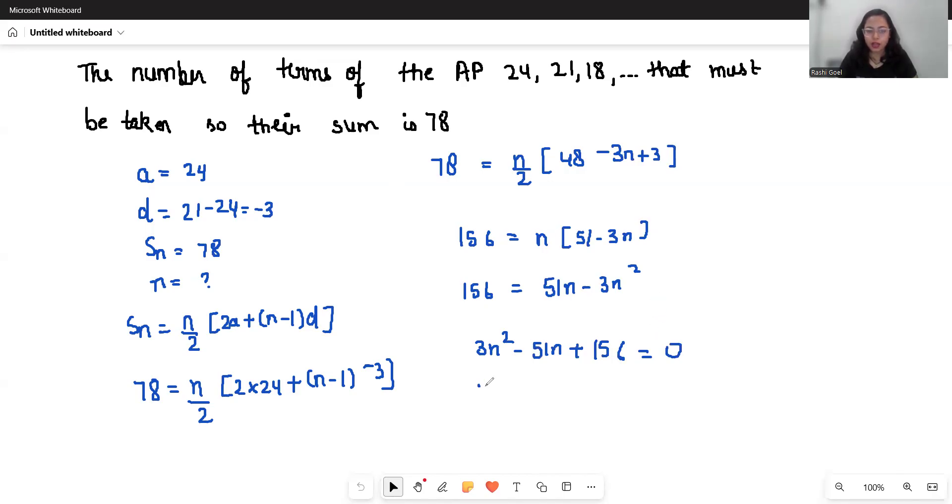So if I will take 3 as common, n square minus 17n plus 52 equals 0.